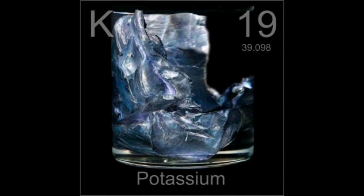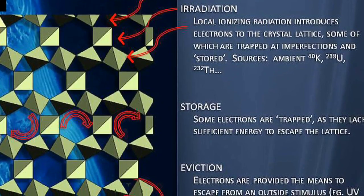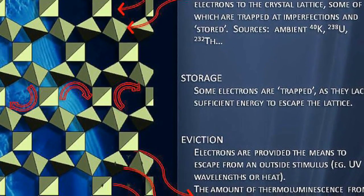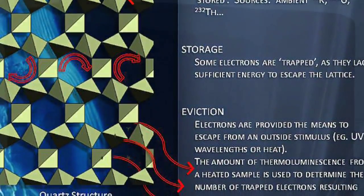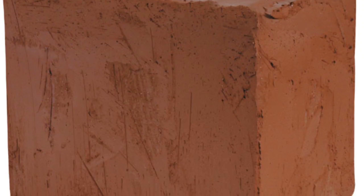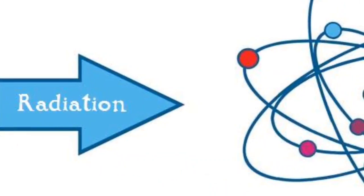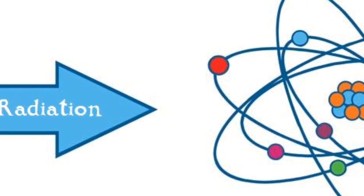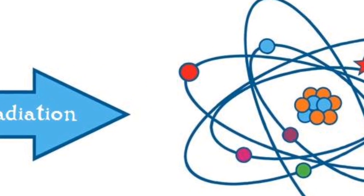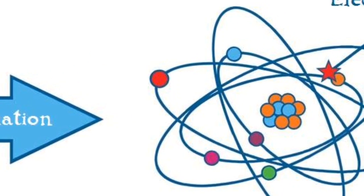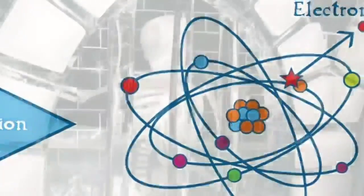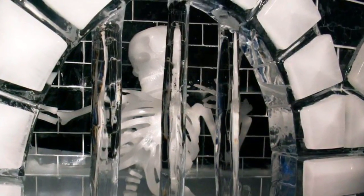Thermoluminescent dating depends upon a reaction between this radiation, certain materials, and crystalline formations. For example, in a material such as a block of clay, background radiation will have an effect upon its atoms. Ionising radiation has the potential to dislodge and expel electrons from atoms within the block of clay. Some of these electrons are then caught within crystalline imperfections within the block of clay, effectively imprisoning them.